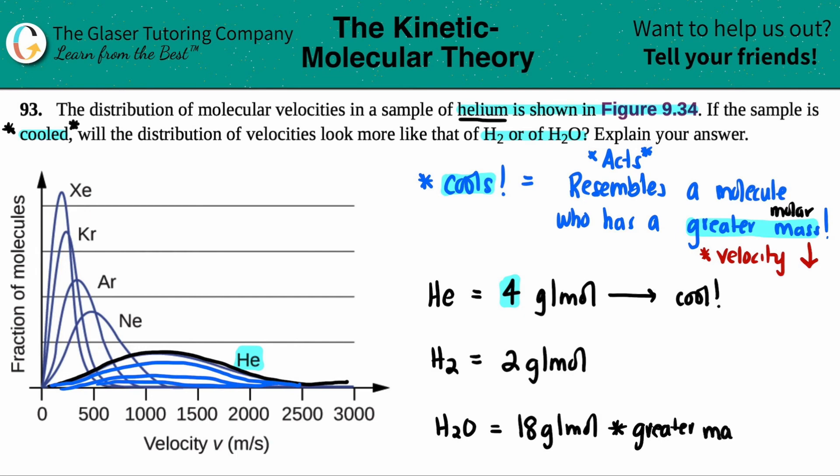So the question was: will the distribution of velocities look more like that of H2 or of H2O? And it will look more like H2O, because when you're cooling it resembles a molecule that has a greater mass because the velocities are going to be slower. And that's what cooling is all about - the velocities will be decreasing, basically, because when you're cooling you're decreasing the temperature.